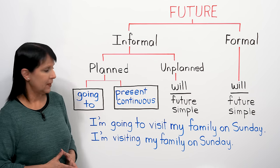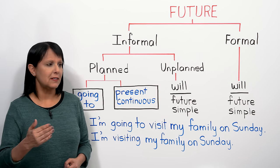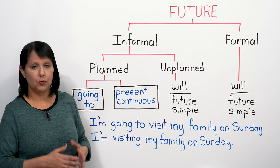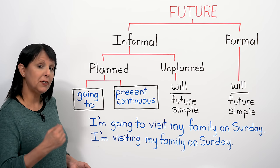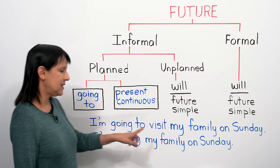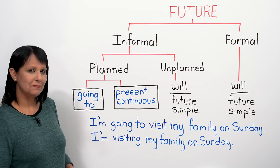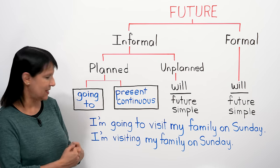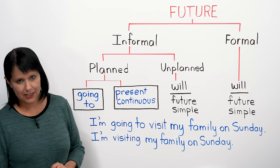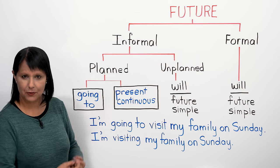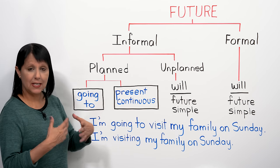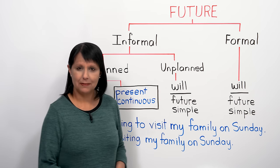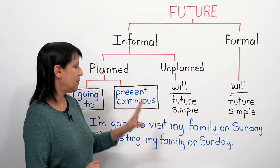If somebody asks you, 'What are you planning to do on Sunday?' — because you already have the plan — you might say, 'I'm going to visit my family on Sunday.' We're using 'going to' because you've already decided, you told your family, everybody's expecting you. It's a plan. Or you could say the same thing using the present continuous tense: 'I'm visiting my family on Sunday.' So this is what we will focus on in this class.